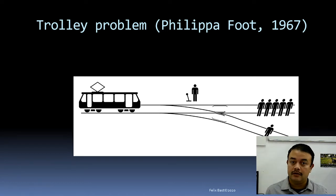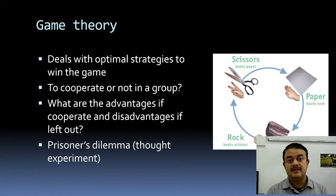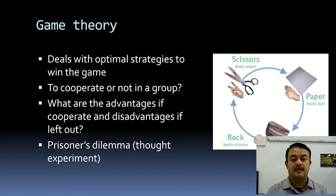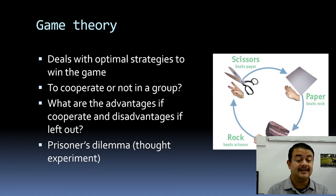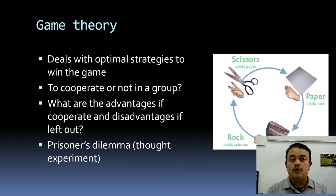These trade-offs bring us to game theory — a mathematical framework dealing with optimal strategies to win a game. A simple example is rock-paper-scissors: whatever decision you make depends on what your opponent does. The key question in game theory is whether to cooperate or compete within a group, and what are the benefits and costs of each strategy.